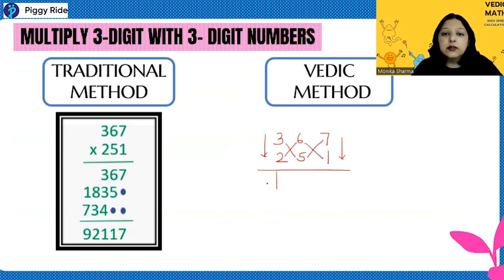So start multiplying according to the arrows. 3 into 5, 15. 15 plus 12 is 27. You can do it mentally also. Middle one leave it. 6 times 1 is 6. 6 plus 35, 41. 7 times 1 is 7.